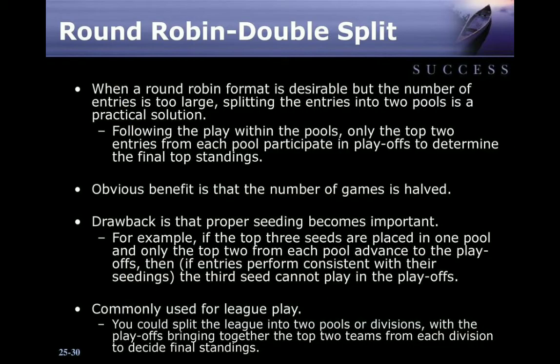Round Robin Double Split: when a Round Robin format is desirable but the number of entries is too large, splitting the entries into two pools is a practical solution. Following play within the pools, only the top two entries from each pool participate in playoffs to determine the final standings. A key benefit is that the number of games is halved. A drawback is that proper seeding becomes important. For example, if the top three seeds are placed into one pool and only the top two from each pool advance, the third seed cannot play in the playoffs.